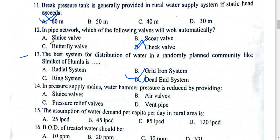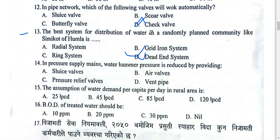Question No. 14: In a water supply system, water hammer pressure is reduced by providing slow-closing valves. Air valves will be released; pressure relief valves will also be released to reduce pressure.